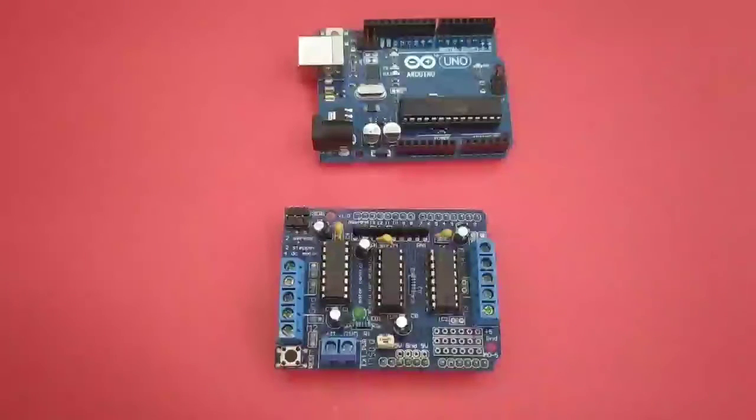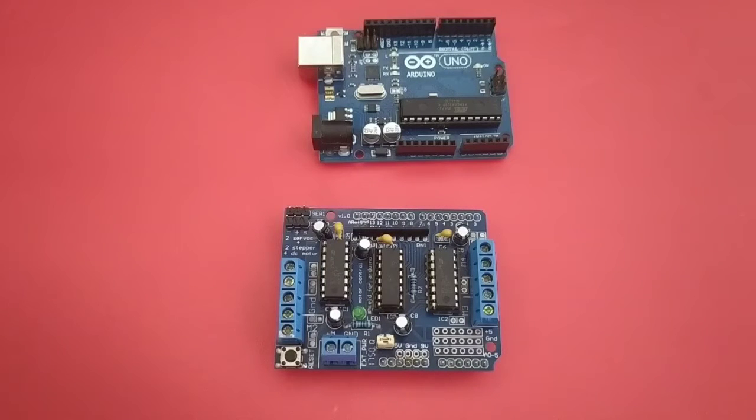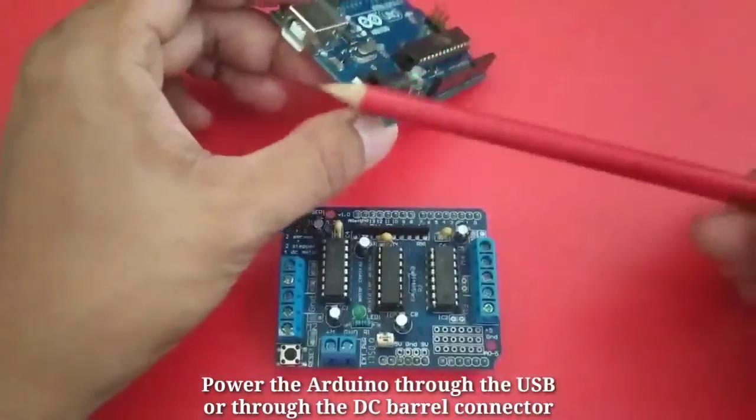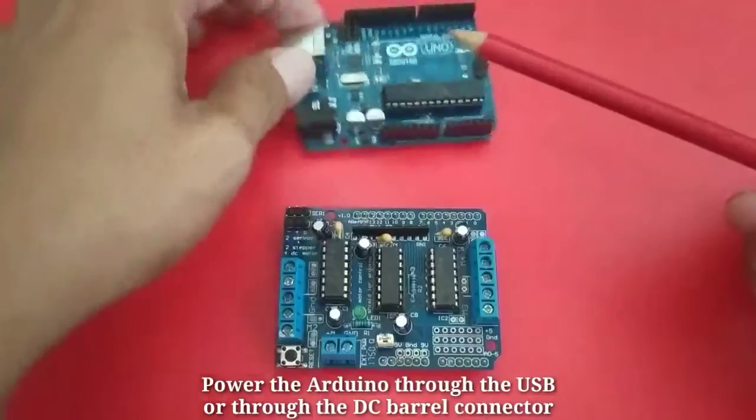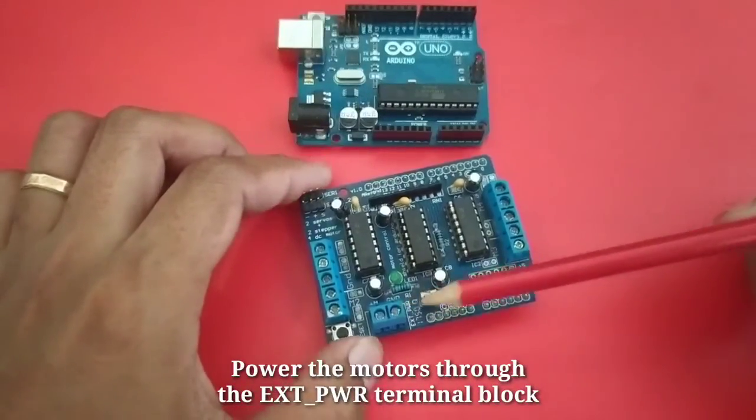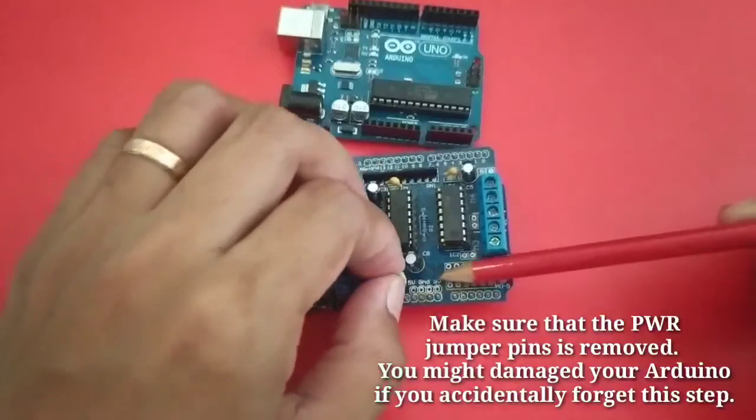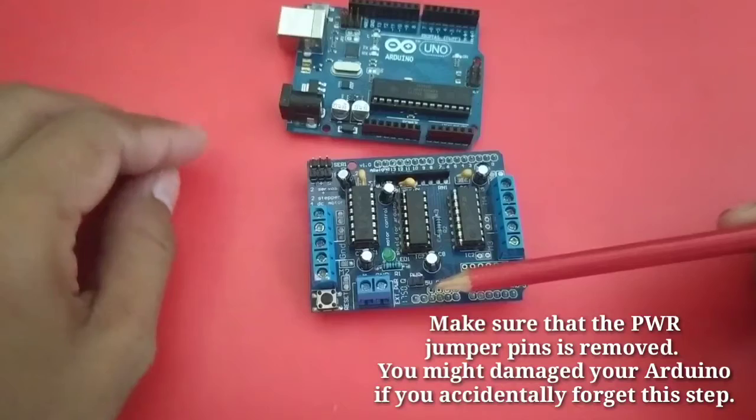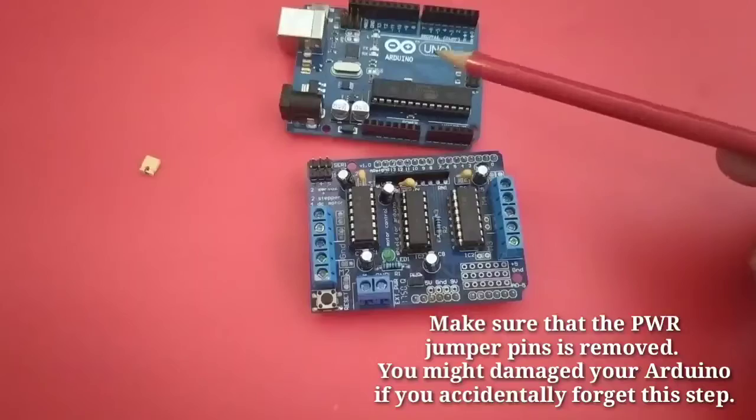The next option is a separate power supply for Arduino and for motors. For Arduino, we can power the Arduino through the DC power, AC to DC barrel jack, or through the USB. Next is for the motor driver shield. We can power the motors through the EXT power and make sure that the jumper wire in the PWR is removed. This is to ensure that we protect our Arduino from damage.